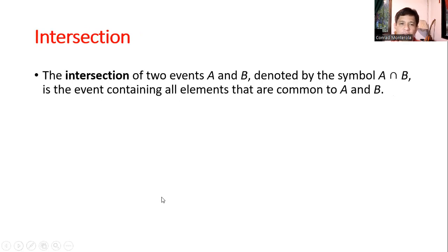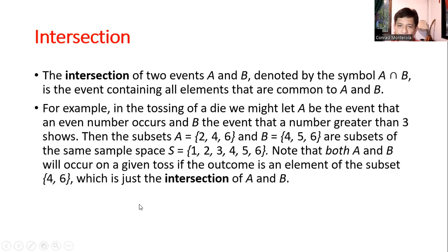Intersection. So the intersection of two events A and B, denoted by the symbol A intersection B, is the event containing all elements that are common to A and B. So for example, in the tossing of a die, we might let A be the event that an even number occurs and B, the event that a number greater than 3 shows. Then the subsets A equals 2, 4, 6, and B equals 4, 5, 6 are subsets of the same sample space S equals 1, 2, 3, 4, 5, 6. So note that both A and B will occur on a given toss if the outcome is an element of the subset 4 and 6, which is just the intersection of A and B.